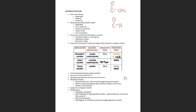Vacuoles are another organelle to know — we typically see them in plant cells. They are used for storage, particularly water storage in plants, though vacuoles in general are just for storage. To study this section, pull up a picture of an animal cell and practice pointing out all the organelles with their functions: rough ER for protein synthesis because it has ribosomes, Golgi body for modifying, packaging, and transporting proteins. If you can do that, you should be well prepared for this part of the exam.